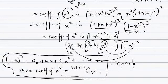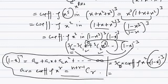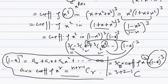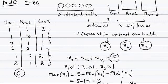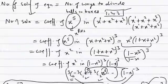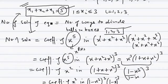The answer is 3C0 times the coefficient of x² in (1 - x)⁻³. Using the formula with n = 3, r = 2: the coefficient is (n + r - 1)Cr = (3 + 2 - 1)C2 = 4C2 = 6. So the number of solutions is 6. To summarize: we map the permutation question to an integral equation, then find the number of solutions using the generating function approach — these are two separate steps: modeling the problem and solving the integral equation.